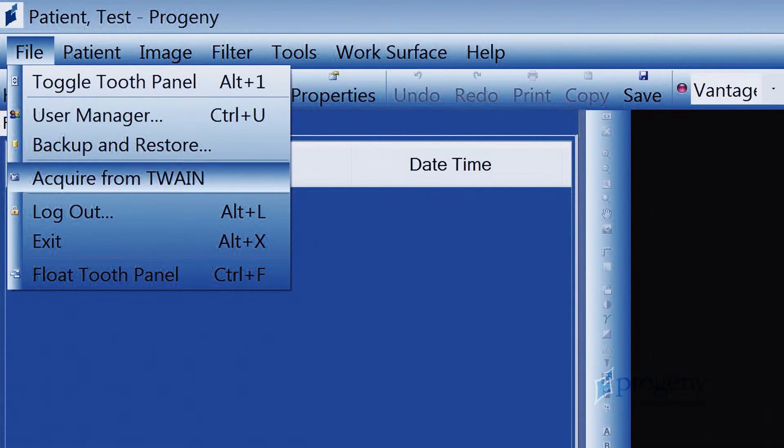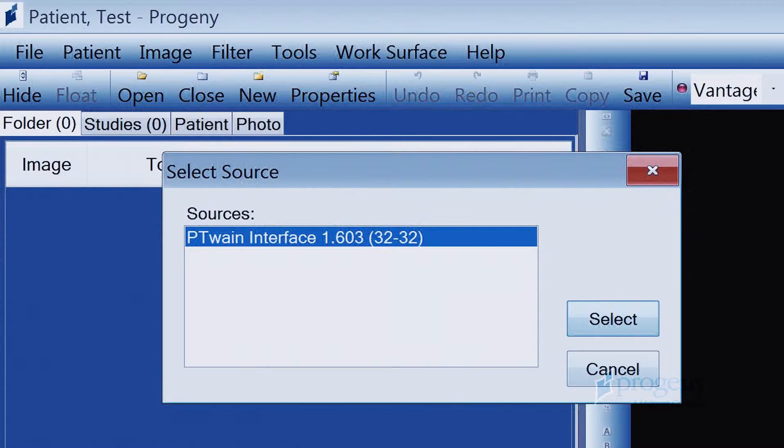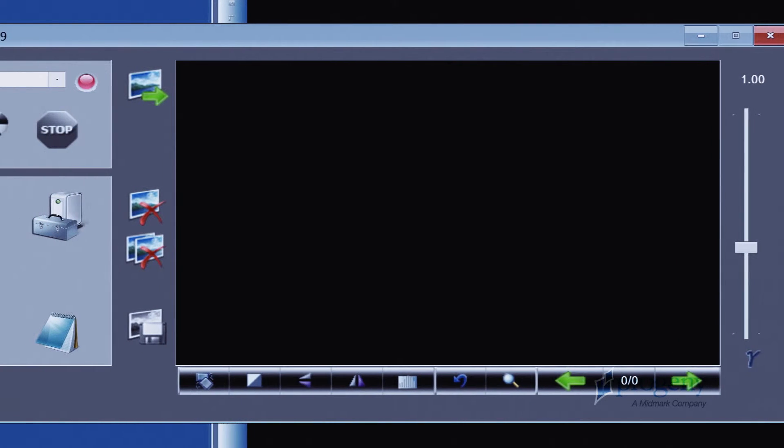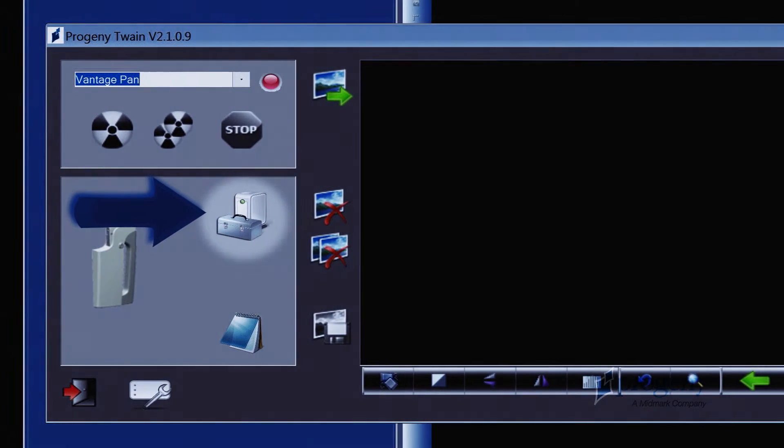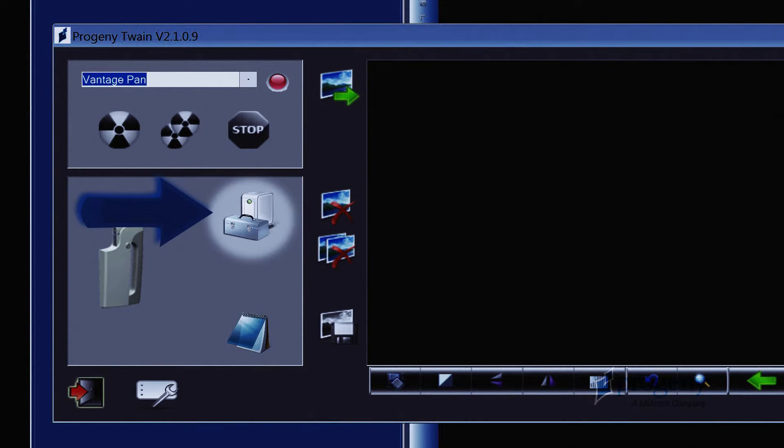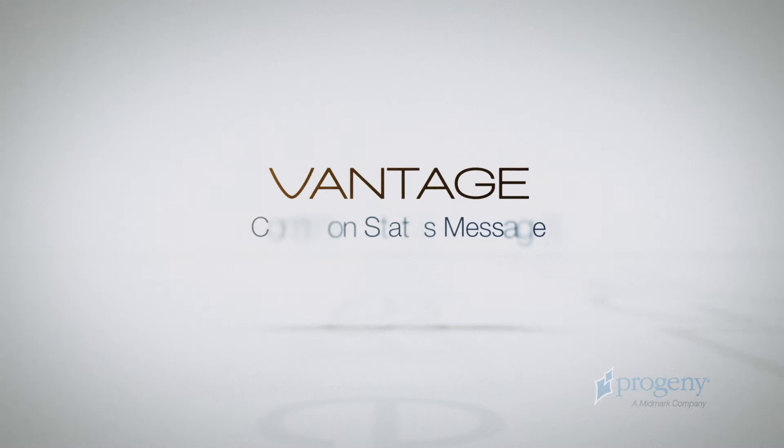If you are using Vantage Pan from a third-party application, you will need to open Progeny's Twain interface to connect to the Vantage system. To access Device Configuration, click on the Device Configuration icon within the Twain.